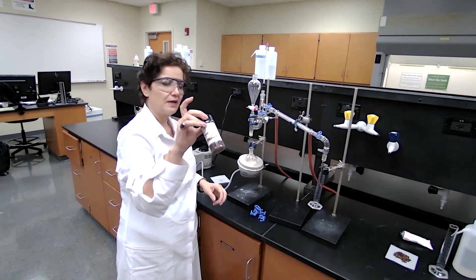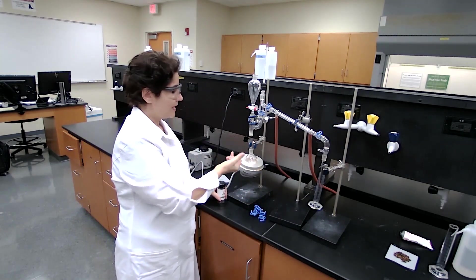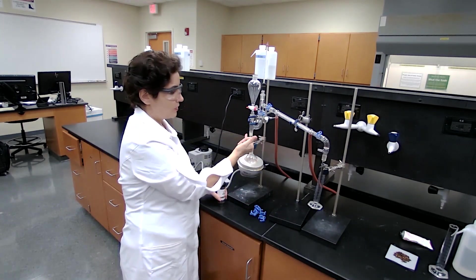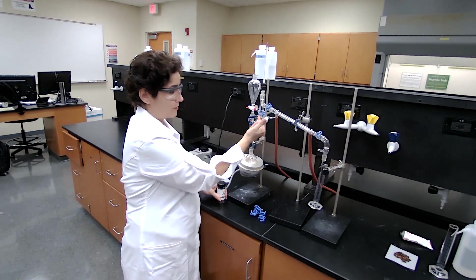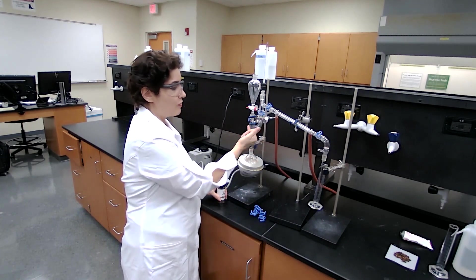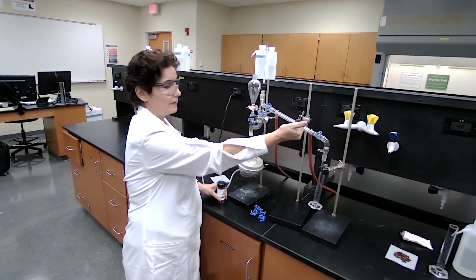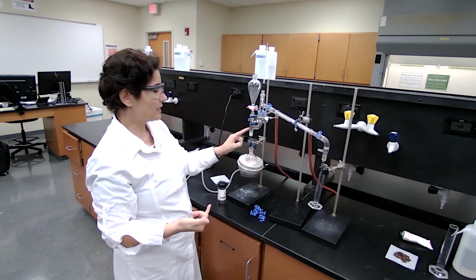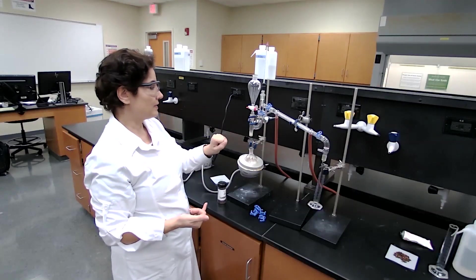These are natural products. They can foam a lot, and I don't want the foam to make its way to the condenser. So it's going to make this curve here, and the foam, it will be harder for the foam to make its way to the condenser. That's one purpose of using Claisen adapter here.